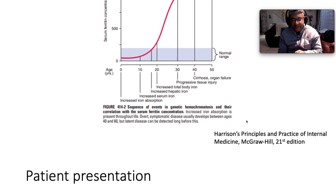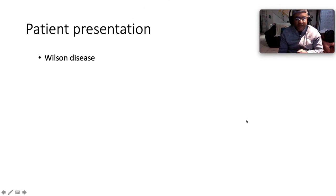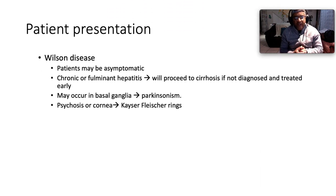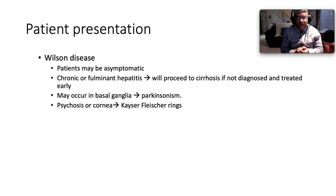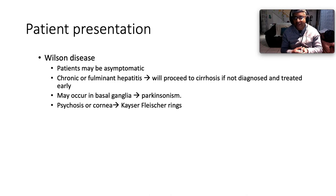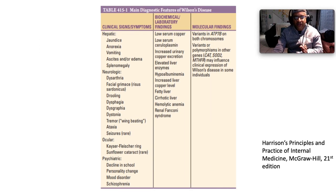In Wilson disease, patients may be asymptomatic but may develop chronic or fulminant hepatitis proceeding to cirrhosis if not diagnosed and treated early. Copper deposition in the basal ganglia can give rise to parkinsonism or psychosis. Deposition in the cornea gives the pathognomonic Kayser-Fleischer rings under slit-lamp examination.